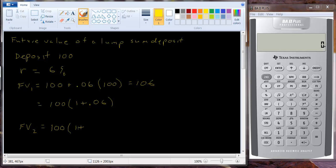It's as if we started with a hundred and six dollars in our account. So we have one hundred times one plus point oh six plus we're going to get point oh six times one hundred times one plus point oh six.